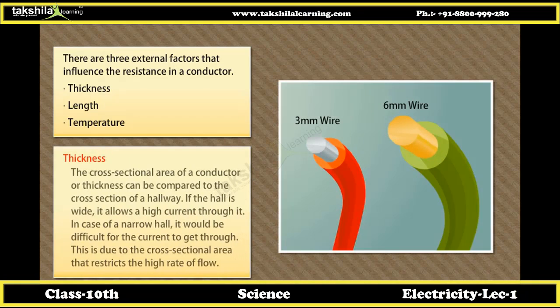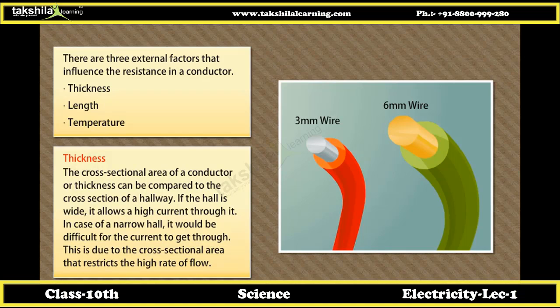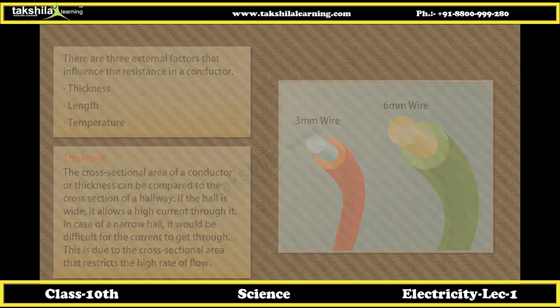Thickness. The cross-sectional area of a conductor, or thickness, can be compared to the cross-section of a hallway. If the hall is wide, it allows a high current through it. In the case of a narrow hall, it would be difficult for the current to get through, due to the cross-sectional area restricting the high rate of flow.